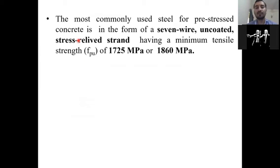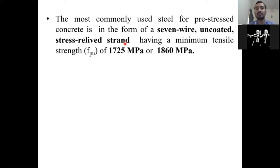What you have to remember: the most commonly used steel for pre-stressed concrete is in the form of 7-wire uncoated stress-relieved strands. Stress-relieved means the strands do not have residual stresses. Normally in design we use 7-wire strands of grade 1725 MPa or 1860 MPa.